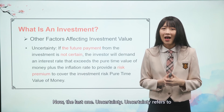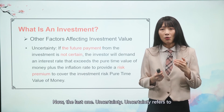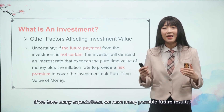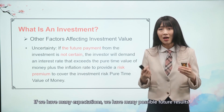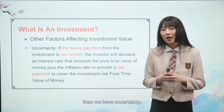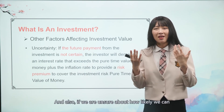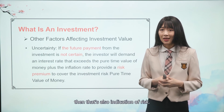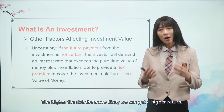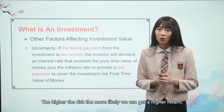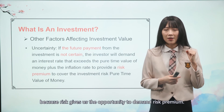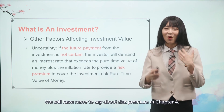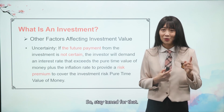Now the last one: uncertainty. Uncertainty refers to the possibility that we might not have only one future outcome. If we have many possible future results, then we have uncertainty. And if we are unsure about how likely we are to receive these cash flows on time and in full amount, that's also an indication of risk. The higher the risk, the more likely we can demand a higher return, because risk gives us the opportunity to demand a risk premium. We will have more to say about risk premium in Chapter Four, so stay tuned for that.